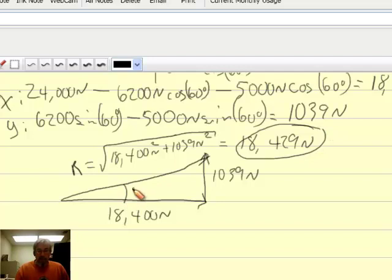Well, if I measure this angle theta, I'm not going to measure it. I'm going to determine it because opposite over adjacent is tangent. So the inverse tangent of opposite, which is 1,039 newtons, over the adjacent, which is 18,400 newtons,